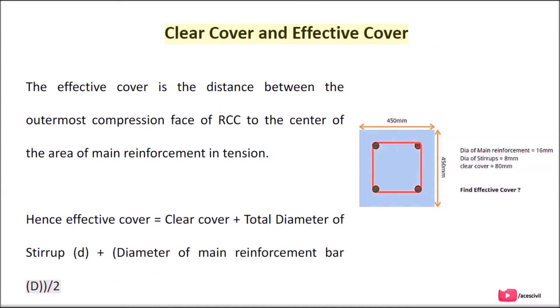Clear cover versus effective cover: The effective cover is the distance between the outermost compression face of RCC to the center of the area of main reinforcement in tension. Hence, effective cover equals clear cover plus total diameter of stirrup (D) plus diameter of main reinforcement bar.